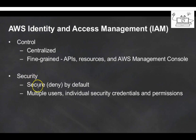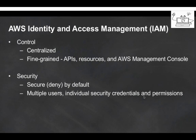By default, whenever you create a user, they have implicit deny permissions — they can only log in to the console but cannot access any resources in AWS, so it is secure by default. If you have multiple users, you can provide them individual security credentials and permissions. Identity and Access Management provides control and security to your AWS account.